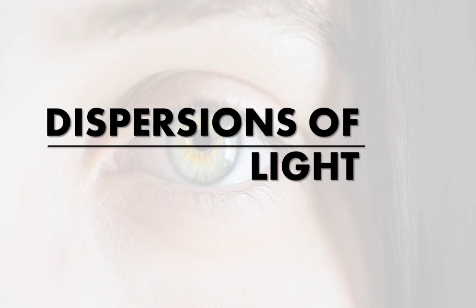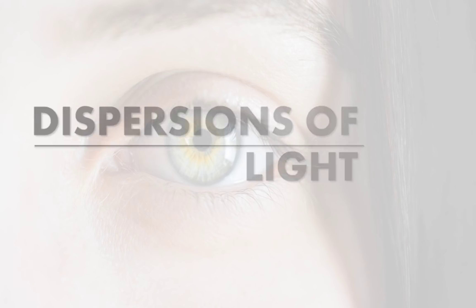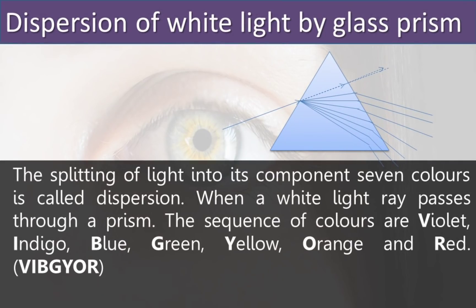Next, we will see some effects of light. The first one is dispersion of light. The splitting of light into its component seven colors is called dispersion. When a white light ray passes through a prism, the sequence of colors is violet, indigo, blue, green, yellow, orange, and red — in short, VIBGYOR. This is called dispersion of white light.